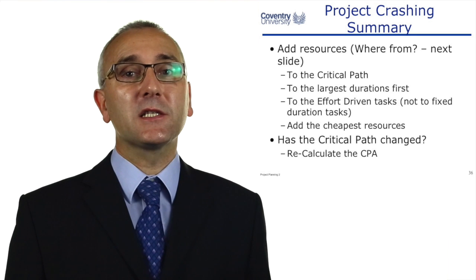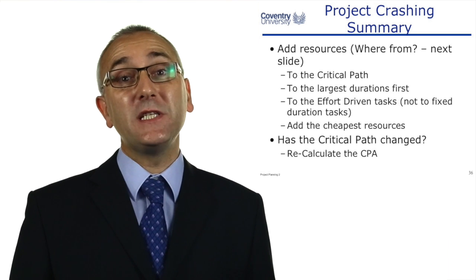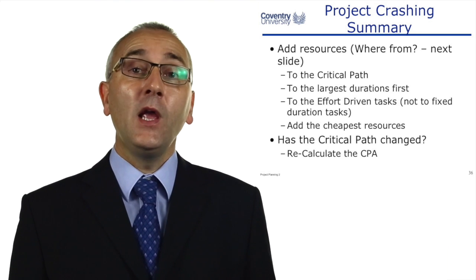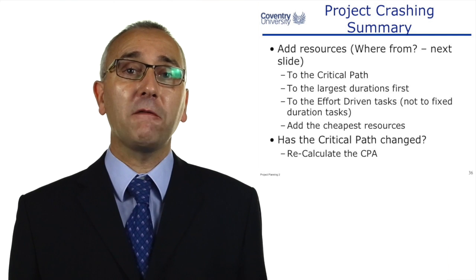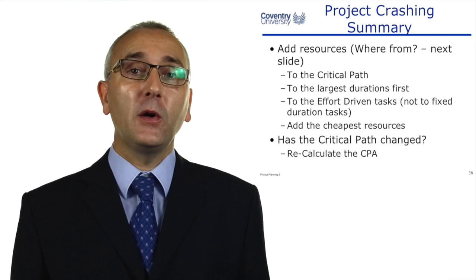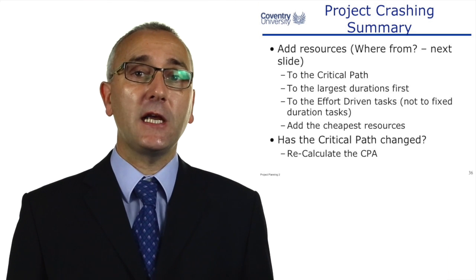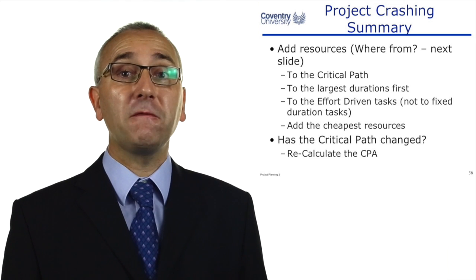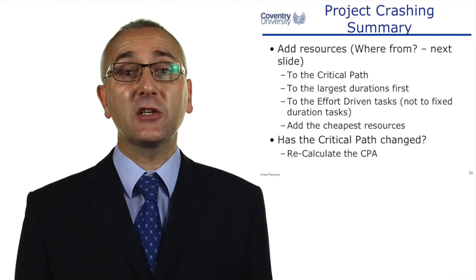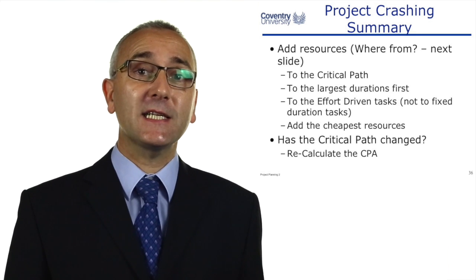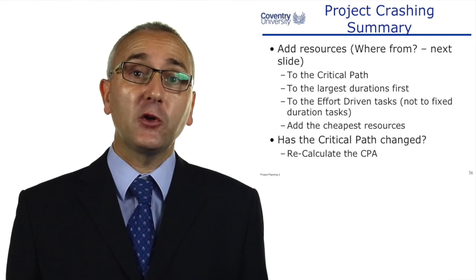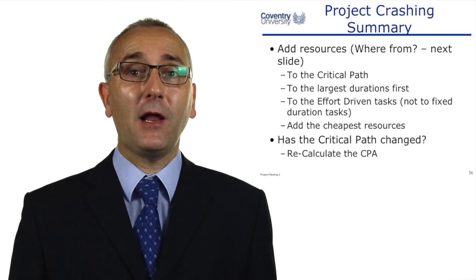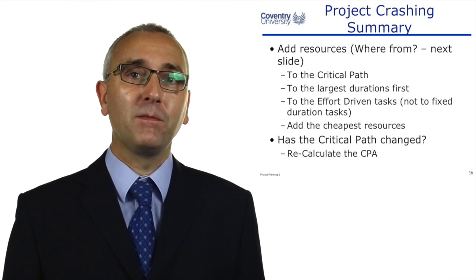To reduce the duration of tasks, you're going to need to add resources. Add resources to the critical path items, but also optimize the non-critical path items in case they become critical. Look at the biggest duration tasks first — if we can halve a 10-day duration, we immediately save five days. If you only look at small durations, a two-day duration halved only saves one day. Look at the effort-driven tasks — there is no point in adding resources to fixed duration tasks.